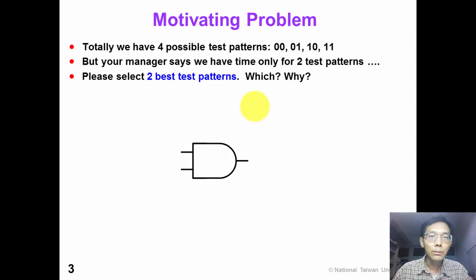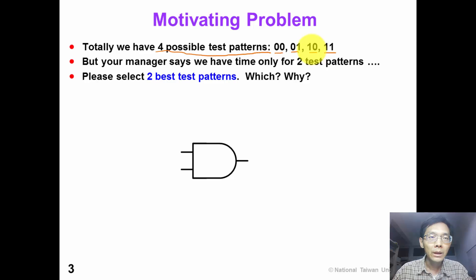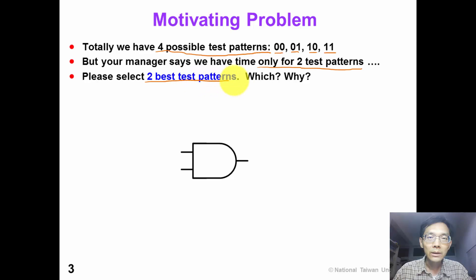Here is a motivating problem. For this AND gate, there are two inputs and four possible test patterns: 00, 01, 10, and 11. Suppose that your manager says we have only time for two test patterns. So which two patterns are you going to select, and what is the reason?